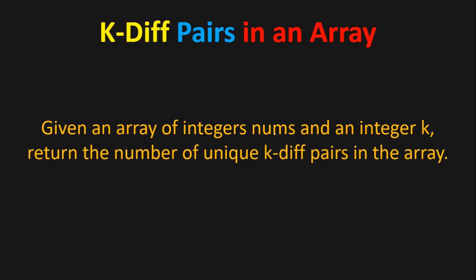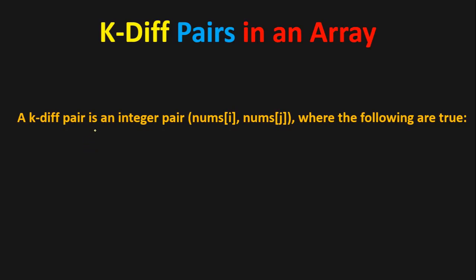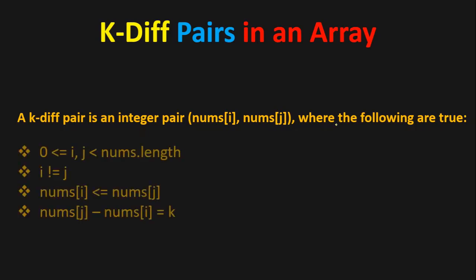Welcome to the coding interview question: k-diff pairs in an array. You are given an array of integers nums and an integer k. Return the number of unique k-diff pairs in the array. A k-diff pair is an integer pair (nums[i], nums[z]) where we have four conditions: zero less than or equals to i, z less than nums dot length as boundary for i and z, i not equals to z, nums[i] less than or equals to nums[z], and nums[z] minus nums[i] equals to k.